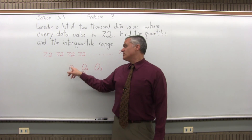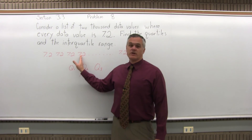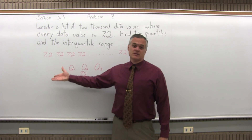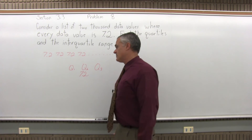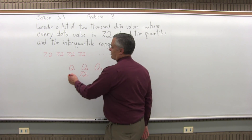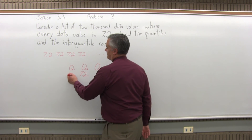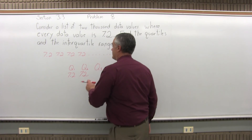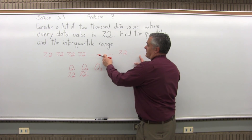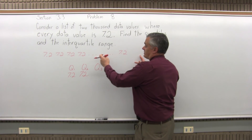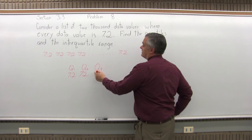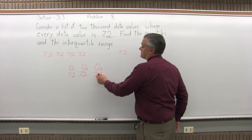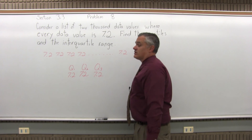Same thing with Q1 and Q3. Q1 is the midpoint of the lower half of the list, not including Q2 — that's 7.2. And Q3 is the midpoint of the upper half of the list, not including Q2 — also going to be 7.2.